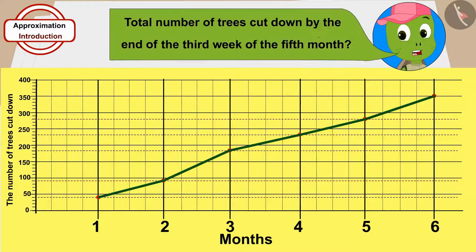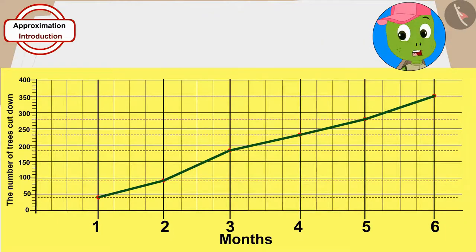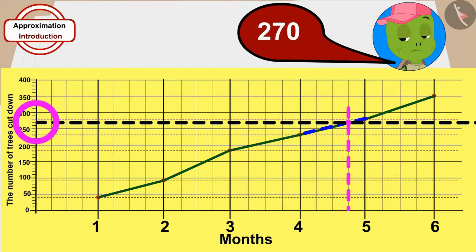Hmm, how do I estimate the total number of trees cut down by the end of the third week of the fifth month? I will connect these points of the fourth and fifth months in a straight line. In this way, where the vertical line of the third week of the fifth month is meeting with this line. From that point, I can approximate that, in the fifth month, how many trees will be cut in total by the end of the third week. Oh God, this point is at 270. By the end of the third week of the fifth month, a total of 270 trees were cut.